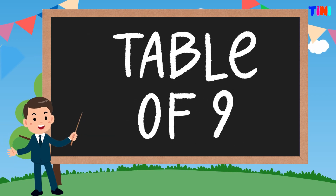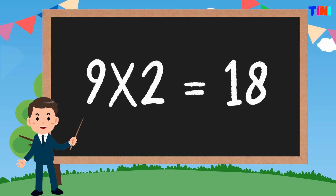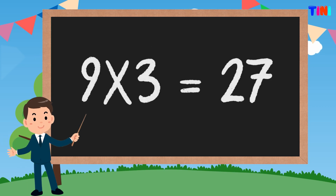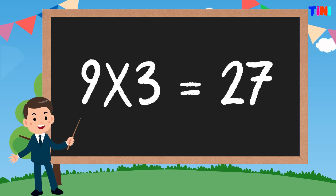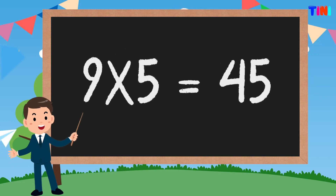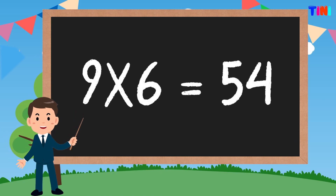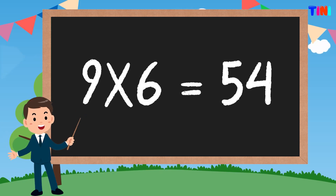Table of nine. 9 ones are 9. 9 twos are 18. 9 threes are 27. 9 fours are 36. 9 fives are 45. 9 sixes are 54. 9 sevens are 63. 9 eights are 72. 9 nines are 81. 9 tens are 90.